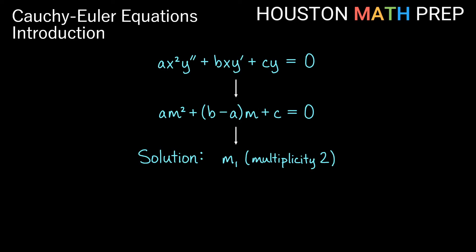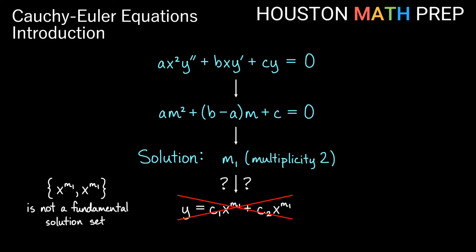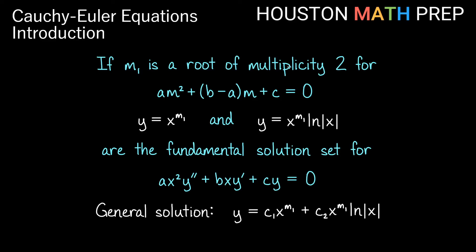It's possible we don't get two distinct real roots. If we get one solution m sub 1 with multiplicity 2, we cannot write c1 x to the m1 plus c2 x to the m1 — those are not linearly independent. When we have a repeated real root, our fundamental solution set is x to that power, and x to that power times the natural log of absolute value x. That gives us a linearly independent pair, and the general solution is c1 x to the m1 plus c2 x to the m1 times ln|x|.